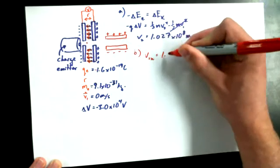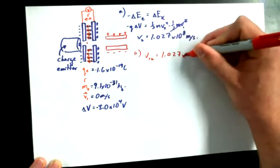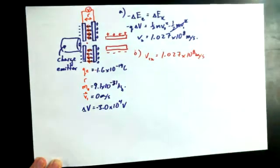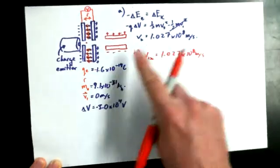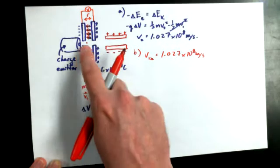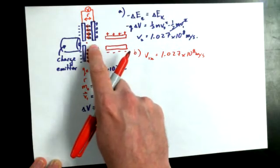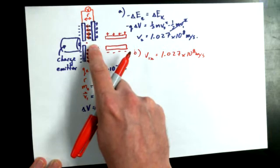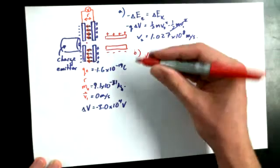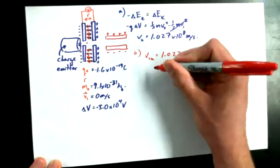V1X is equal to 1.027 times 10 to the power of 8 meters per second. Notice that V1X for this projectile motion is the exit velocity from the acceleration plates over here. So we're getting our initial velocity from the exit velocity over here. And we're going to assume for such a small particle that no real friction happens between this point and this point to slow it down. It's not really impacting anything.